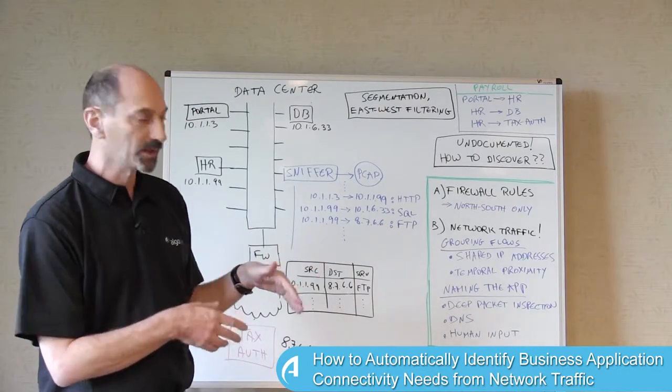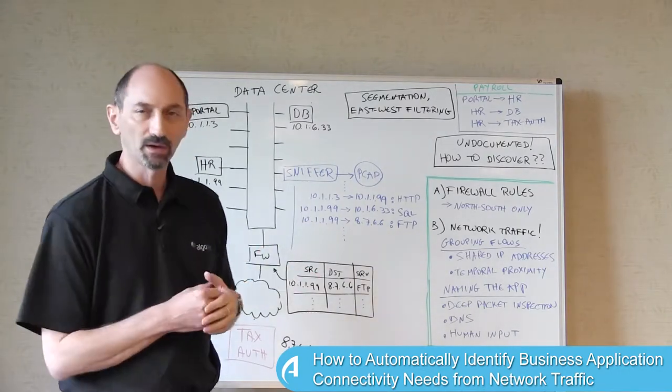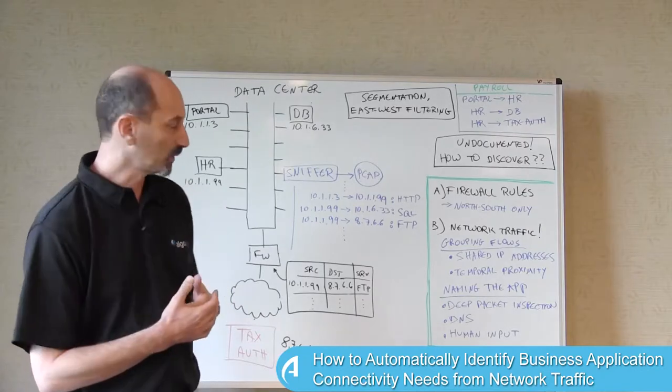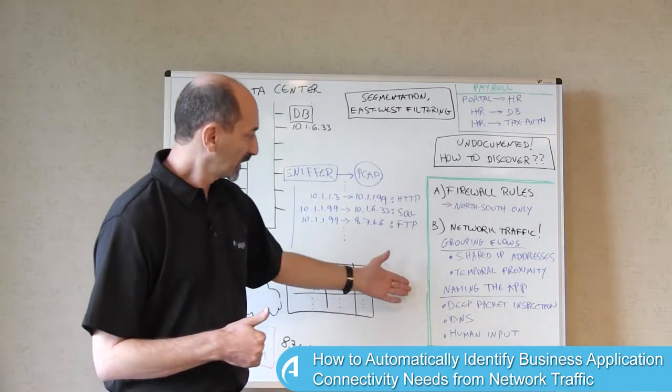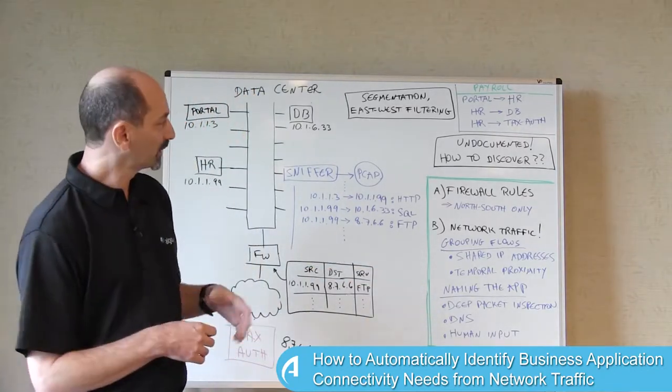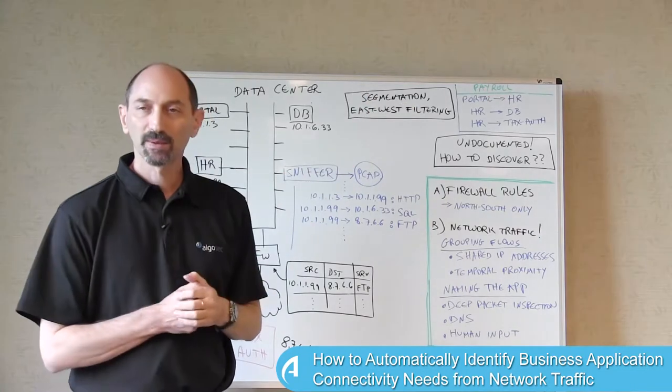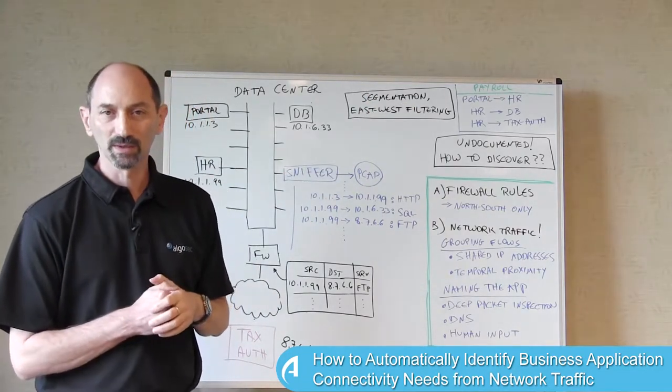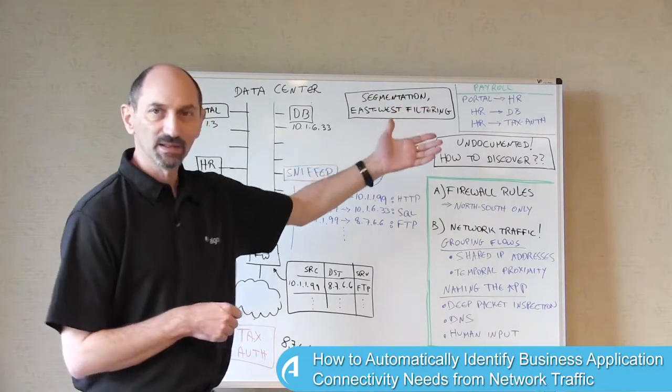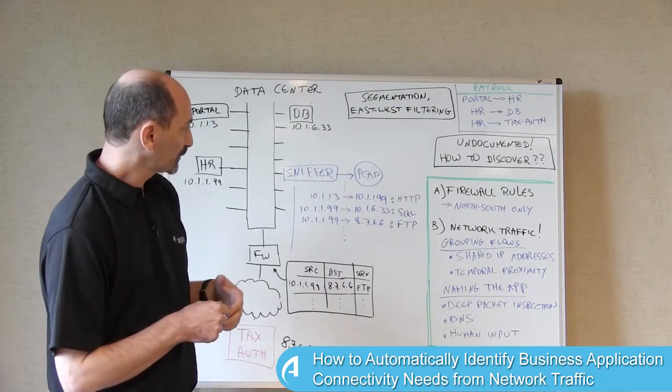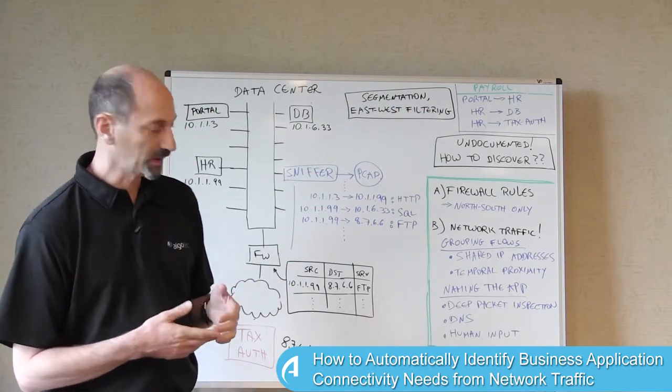Once you've done the grouping and you recognize which flows are related to which other flows, then you need to give things names. After all, the people that run the payroll application don't really know the IP addresses by heart. They need to see names of things. So how can you get this naming information?